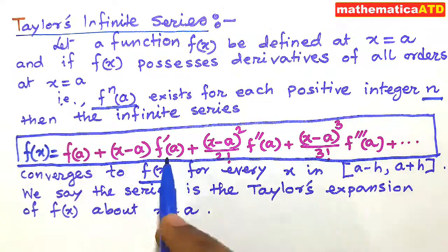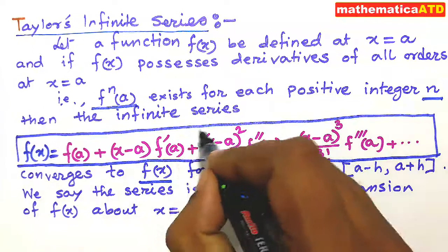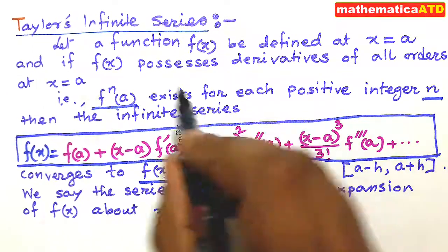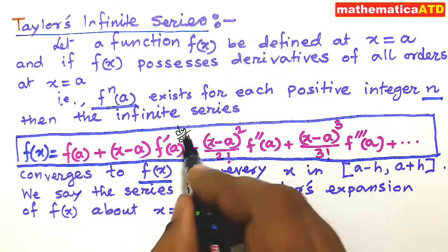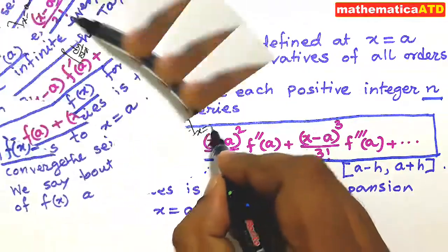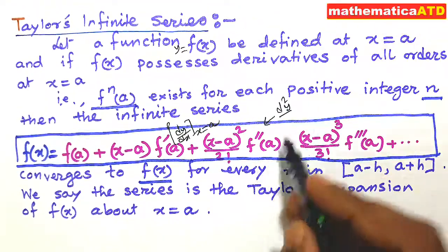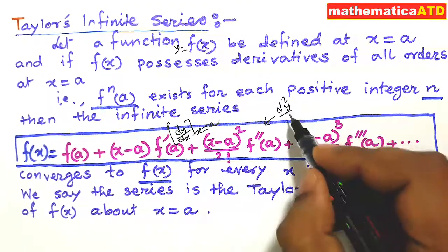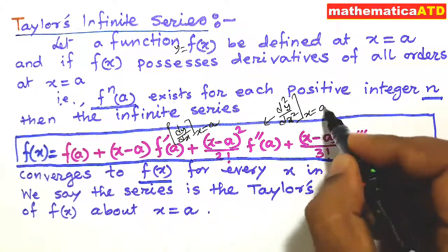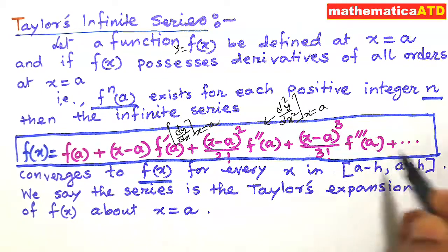What is f'(a)? f'(a) means dy/dx, where y means f(x), at x equal to a. f''(a) means the double derivative of y, d²y/dx² at x equal to a. Similarly, f'''(a) and so on.